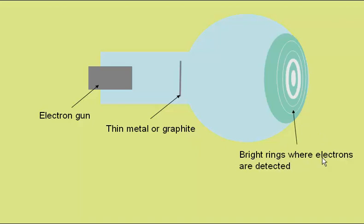This is a simple diagram of their apparatus, with an electron gun firing electrons towards a screen which would glow when hit by electrons. There was thin metal in Thompson's experiment, graphite in Davison and Germer's experiment. What they saw on the screen was bright rings where the electrons are detected. This is the effect we would expect from waves being diffracted. The electrons were behaving as waves.